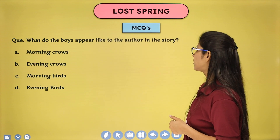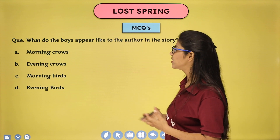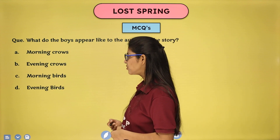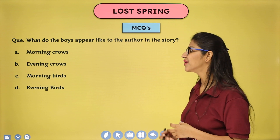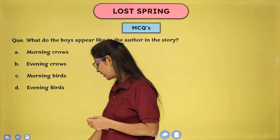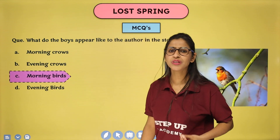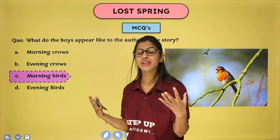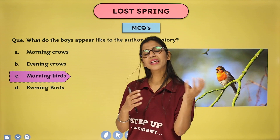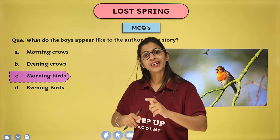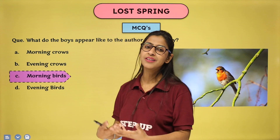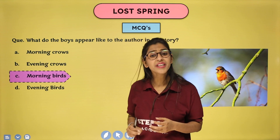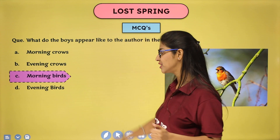What do the boys appear like to the author in the story? Options: morning crows, evening crows, morning birds, evening birds. The answer is: they were morning birds — early birds. They woke up early in the morning because at that time there is more garbage. If they went late, other ragpickers would already have taken the important things. So they woke up early to start their work and collect as much as possible, to at least fulfill their basic need of food, if not clothing or shelter.